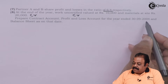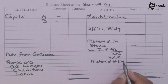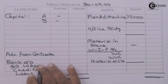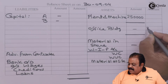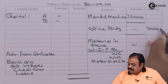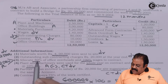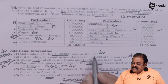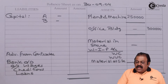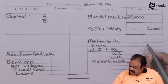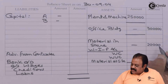Preparing the accounts: plant and machinery of 2,50,000 will be recorded on the asset side of the balance sheet. Office building of 3 lakhs — there is no depreciation on office building, so it is directly written in the outer column at 3 lakhs. Material purchased is 4,20,000; material worth 4 lakhs were sent to site, so the balance material of 20,000 remains in the warehouse and will appear on the asset side as material in stores: 4,20,000 minus 4,00,000 equals 20,000.